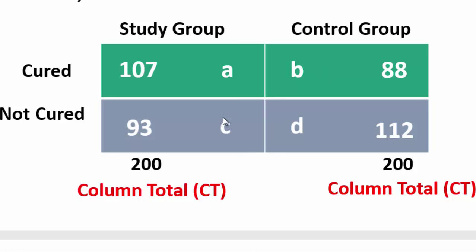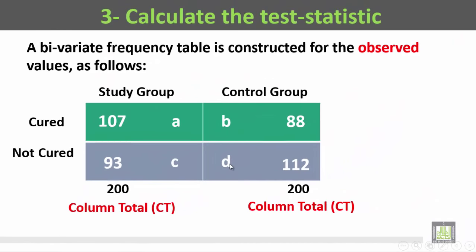We have four cells here. Cell A: the study group patients who were cured. Cell B: the control group patients who were cured. Cell C: the study group patients who were not cured. Cell D: the control group patients who were not cured.